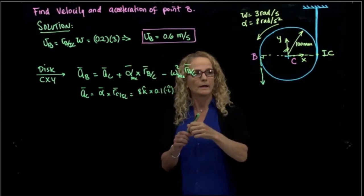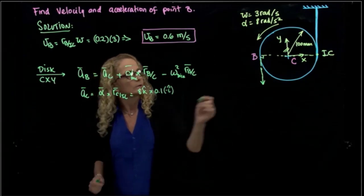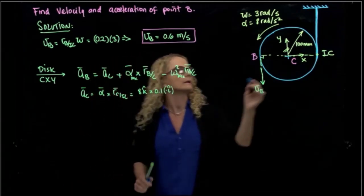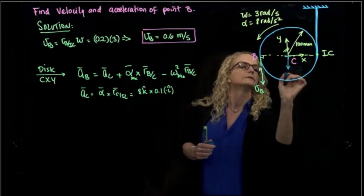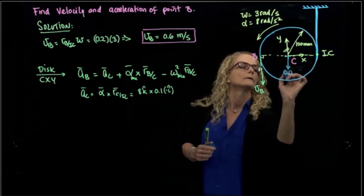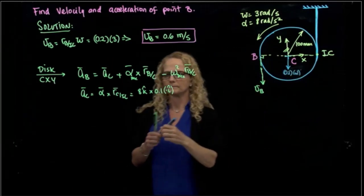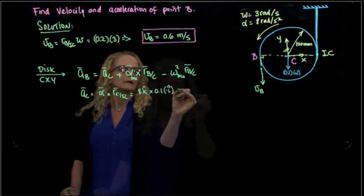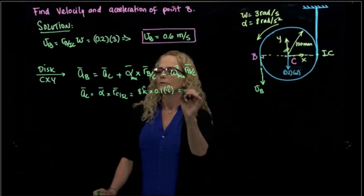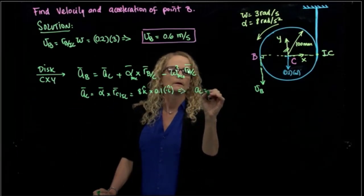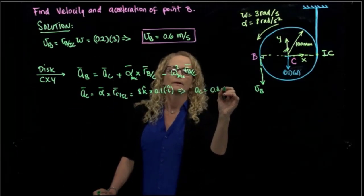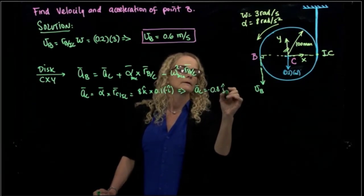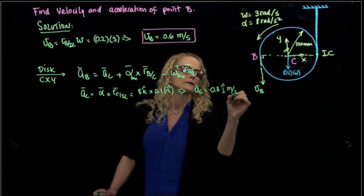So we know that the acceleration of C, let me write it in blue, so it will be 0.1 times i, right? So the acceleration for C will be 0.8 in negative j, meters over seconds squared.